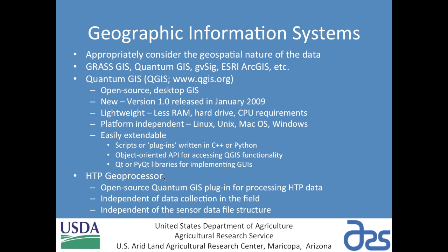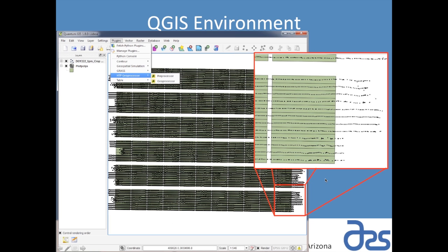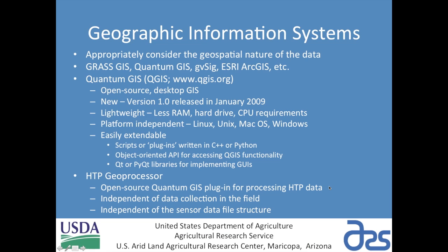One of the things that makes Quantum GIS very useful is that it can be extended by developing custom plug-ins to automate geoprocessing tasks in a way that is efficient and tailored specifically for your application. I've developed a tool called the HTP — High Throughput Phenotyping — Geoprocessor, which handles taking the data from the tractor and turning it into a useful data format for further analysis. This is an open source plug-in installed within the Quantum GIS environment, and the processing happens independently of data collection in the field.